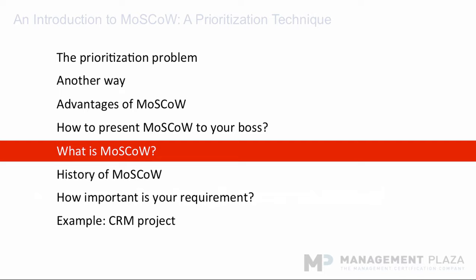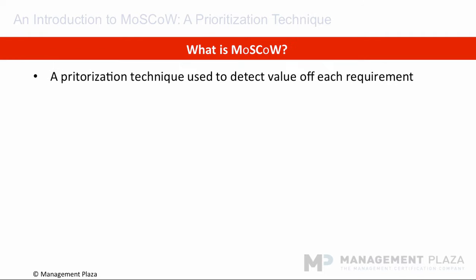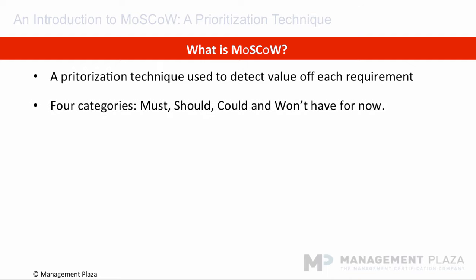Now I will introduce Moscow. Moscow is a prioritization technique used in business analysis and software development to reach a common understanding with stakeholders on the importance they place on each requirement. Moscow has four categories of prioritization which are: must, should, could, and won't have for now.